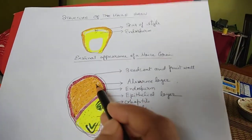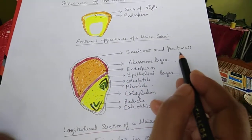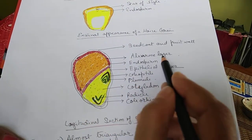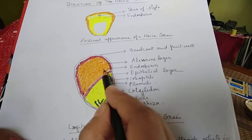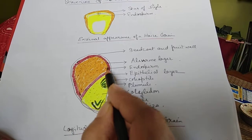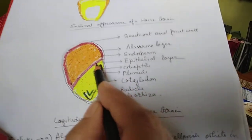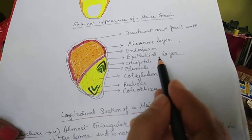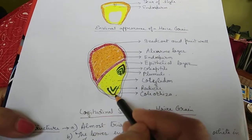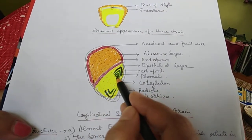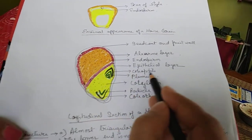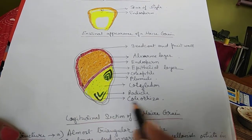In the longitudinal section, just below the fruit wall seed coat is the aleurone layer. Below the aleurone layer is the endosperm — the orange-colored portion. Below the endosperm lies the epithelial layer, which is the germination layer. Then there is the cotyledon — the yellow portion — which contains the plumule and radicle. The plumule is covered by the coleoptile and the radicle is covered by the coleorhiza.